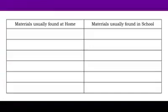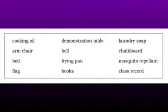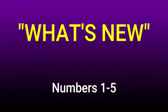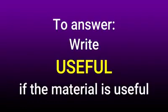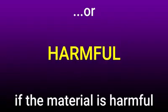Again, for the left column, the items found at home. At the right column, the items found at school. Are you ready? Pause this video while you are answering. Good luck and do your best. We can now turn to page number 4. On your paper with the title 'What's New?', number your paper from 1 to 5. Write 'useful' if the material in the picture I will show you is useful, write 'harmful' if the picture is a material that is harmful. Good luck!